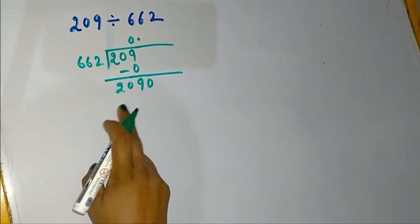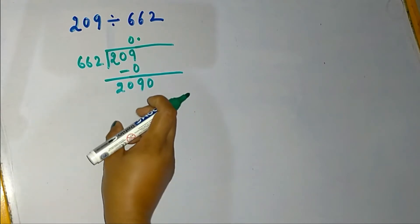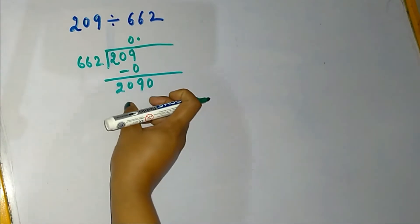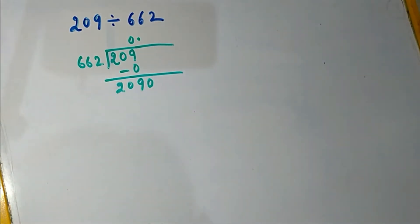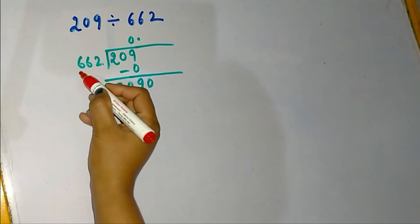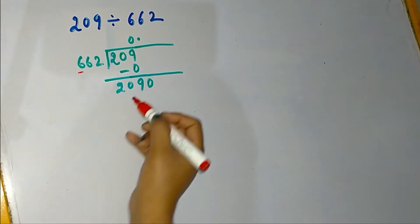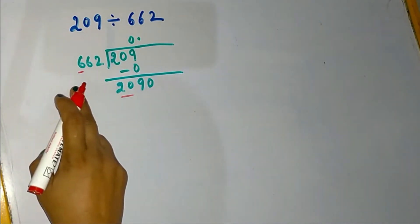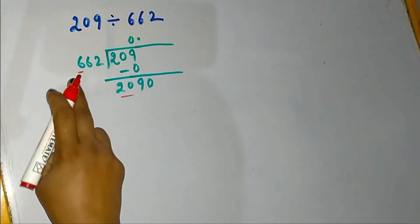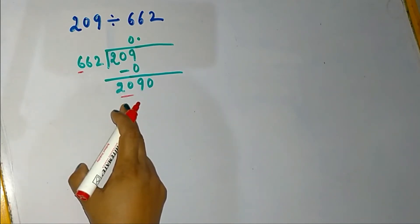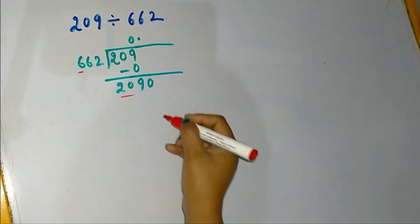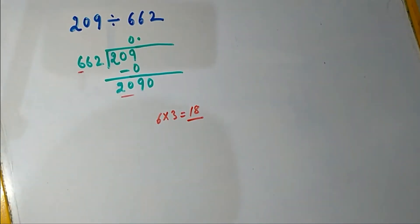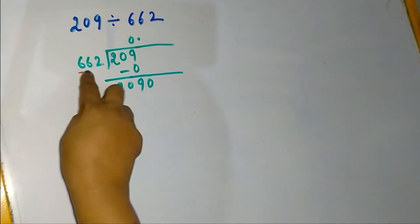Now we have the number 2090. We need to check if there is a number in the table of 662 which is either equal to or less than 2090. To check, we consider the last digit of the divisor, which is 6, and the last two digits of 2090, which is 20. We check whether there is a number in the table of 6 less than or equal to 20. Since 3 times 6 is 18, which is less than 20, we go for 3 times 662.